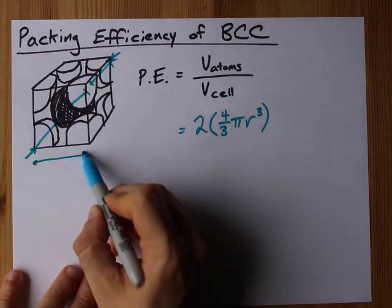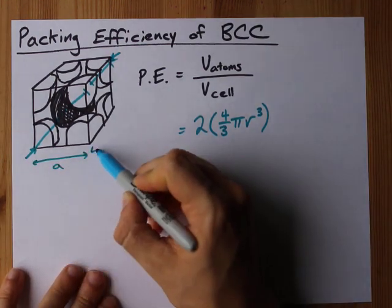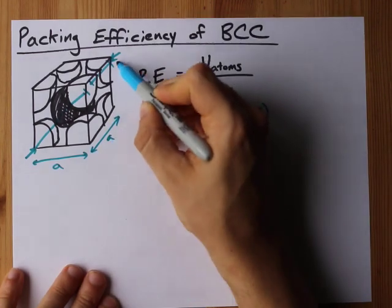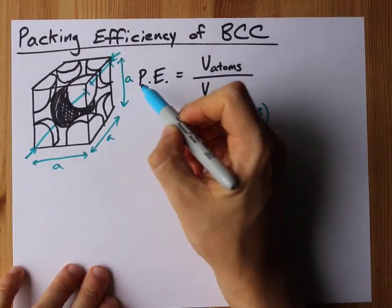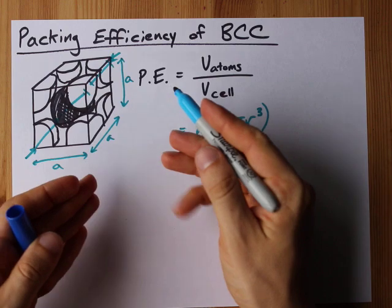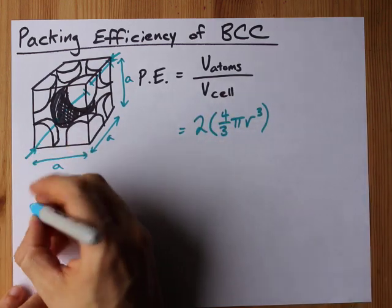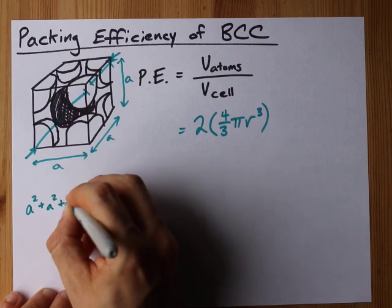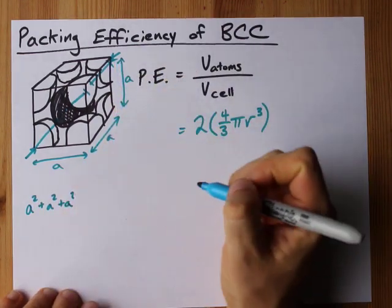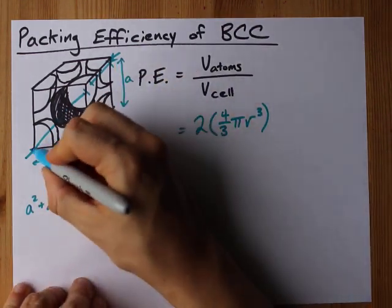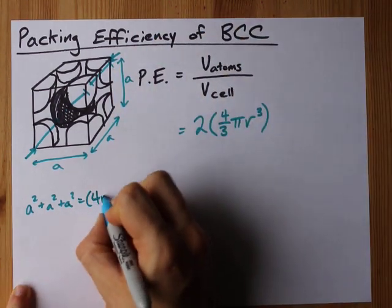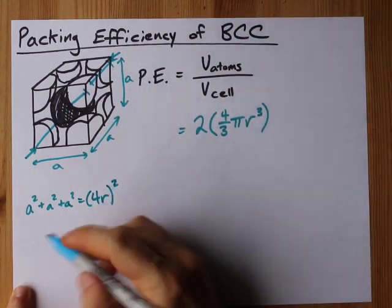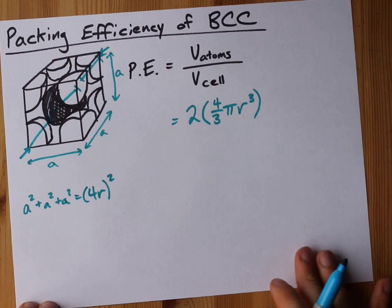You have an edge length called a here, an edge length called a here, and an edge length called a here. So we can use the Pythagorean theorem in three dimensions to prove that a squared plus a squared plus a squared, that's each of the side lengths squared, equals the diagonal squared, which for us is four r. That's the equation I want to deal with.